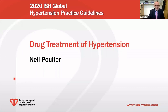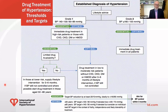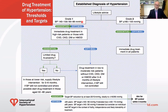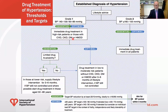My name is Neil Poulter. I'm Chair of Preventive Cardiovascular Medicine at Imperial College London and immediate past president of the International Society of Hypertension. Once you have an established diagnosis of hypertension and lifestyle has not normalized blood pressure, we are left with grade 1 and grade 2 hypertension. If you are in grade 1 and at high risk — due to risk factors, established cardiovascular disease, chronic kidney disease, diabetes, or hypertension-mediated organ damage — you should receive immediate drug treatment. Similarly, if you are in grade 2 (160/100 and above), immediate drug treatment is recommended.